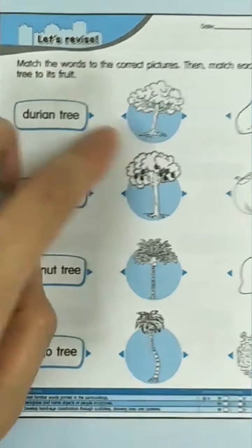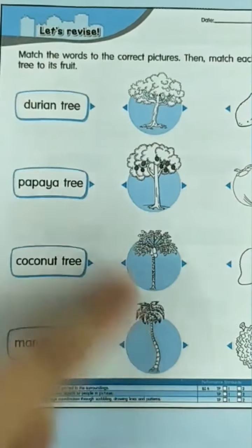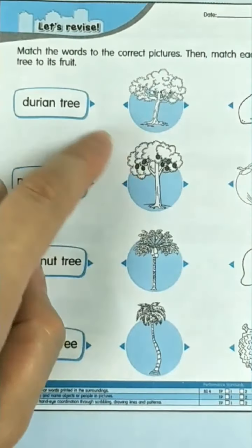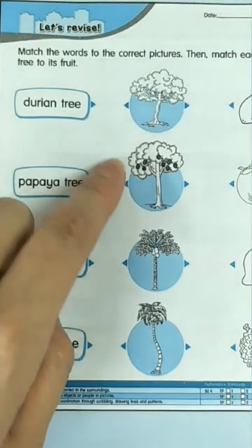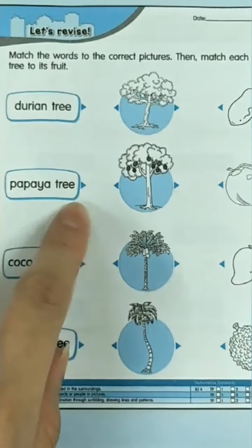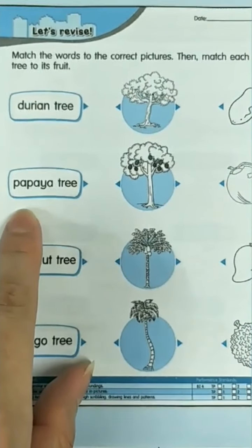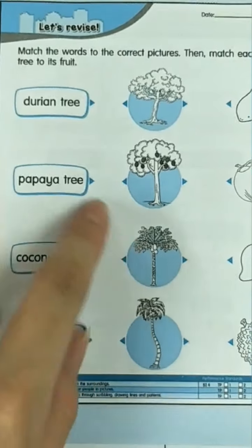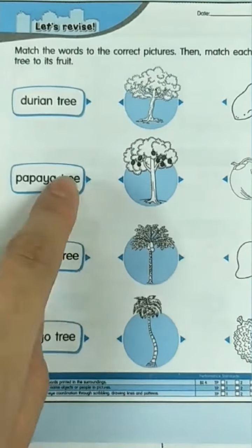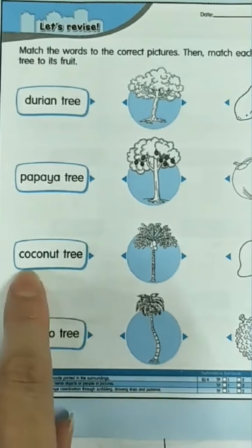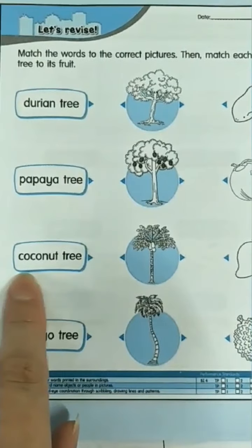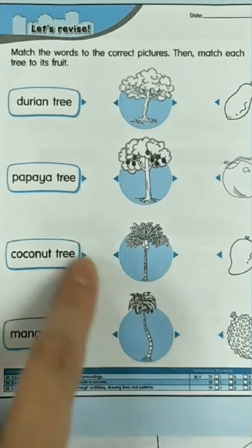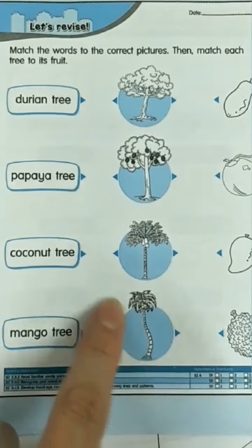Now, do you know which one is the durian tree? Yes, this one is a durian tree. How about the papaya tree? Which one is the papaya tree? Yes, this one is the papaya tree. Where is the coconut tree? Yes, the fourth one is the coconut tree. This one is the coconut tree.